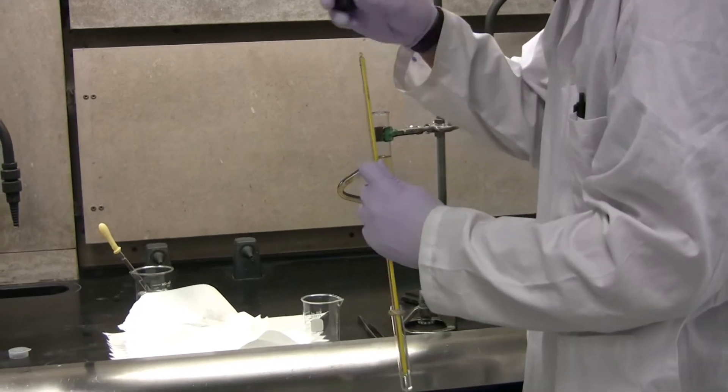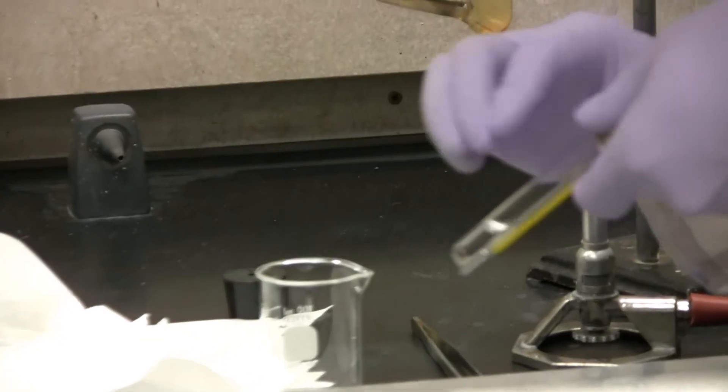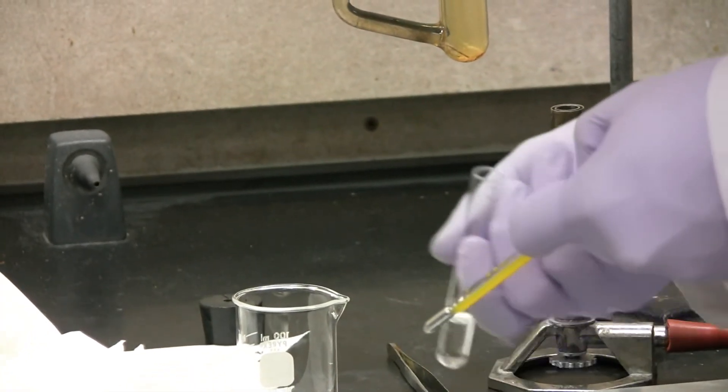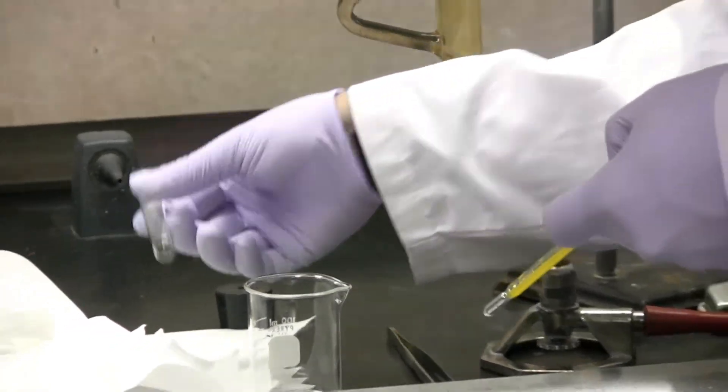Next, your sample in the test tube will need to be removed without spilling and deposited into a waste beaker. The rubber band will be removed.